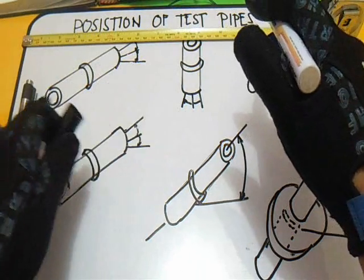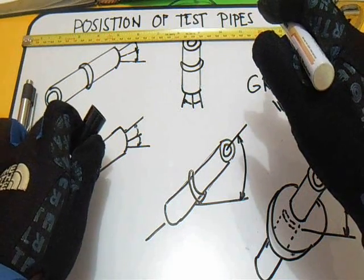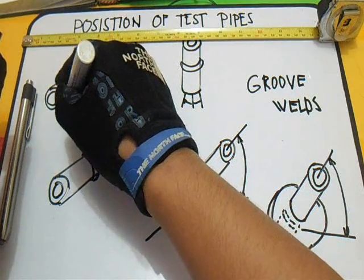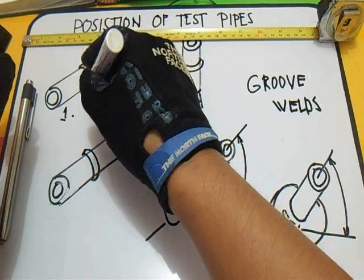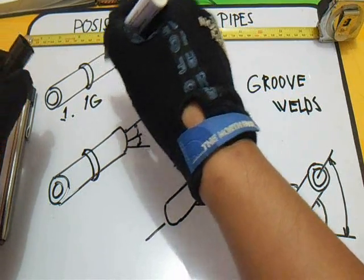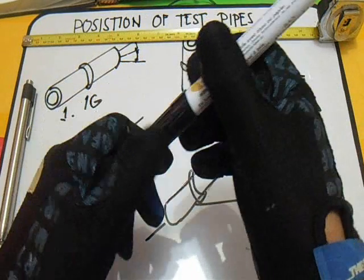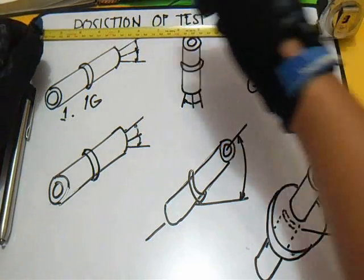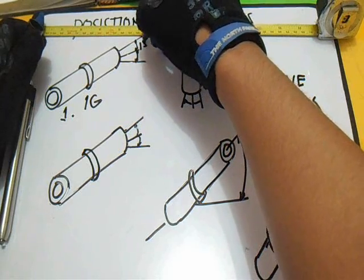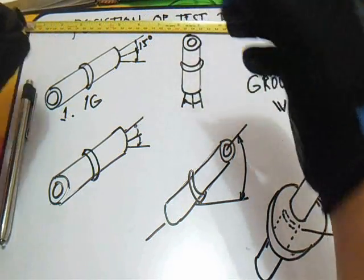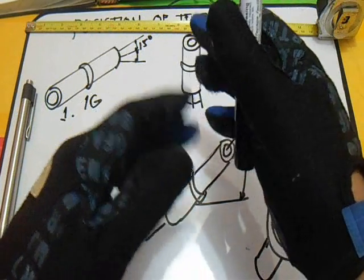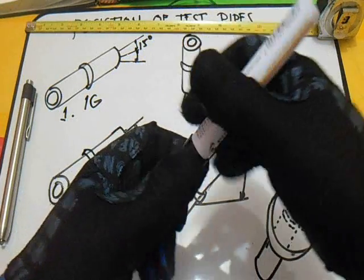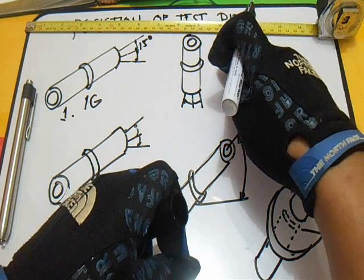So let's start with this test pipe. The position of this one is 1G. 1G means the pipe is horizontal and rotated — flat, with 15 degrees. The filler metal is deposited at the top.